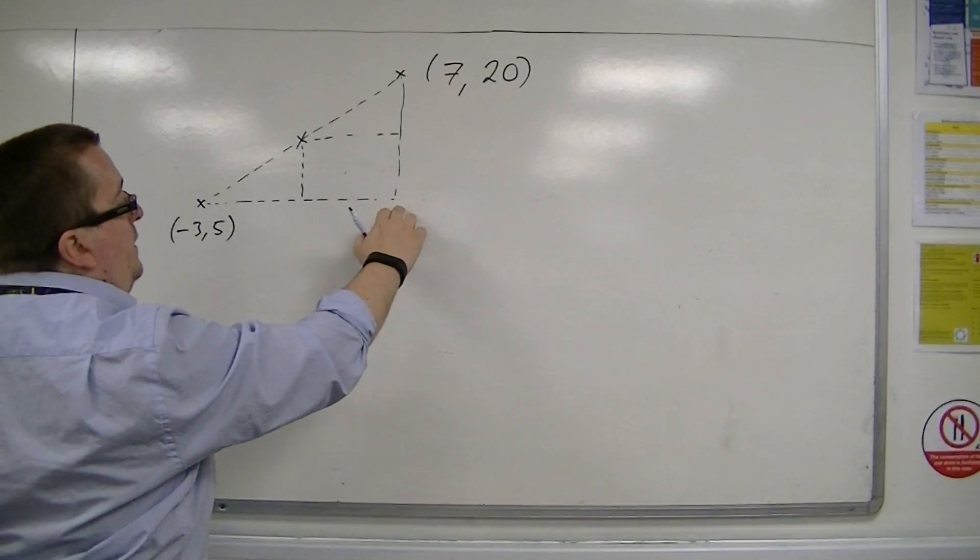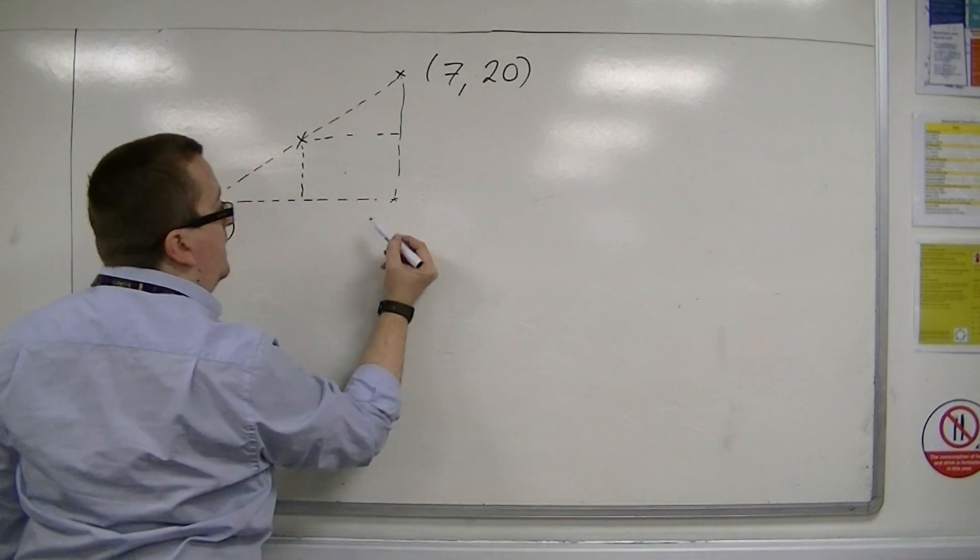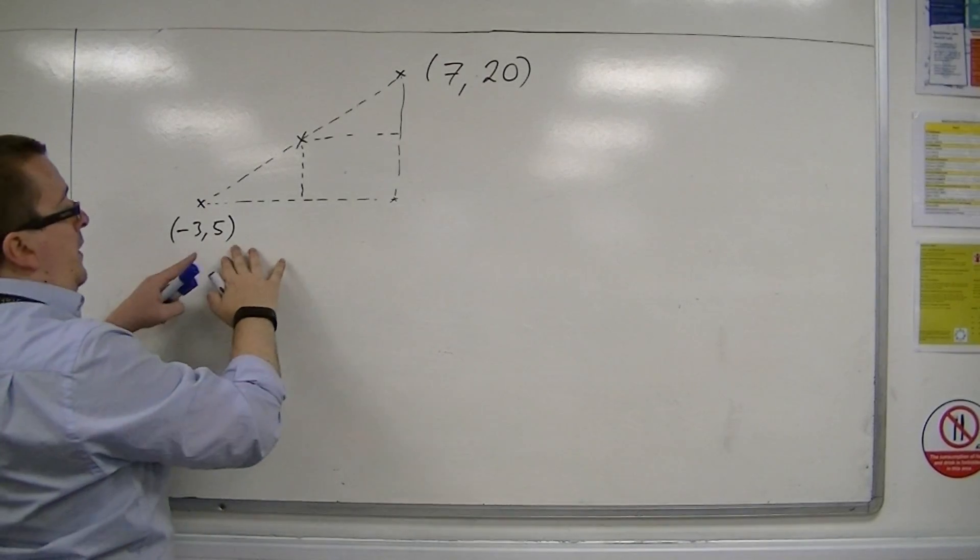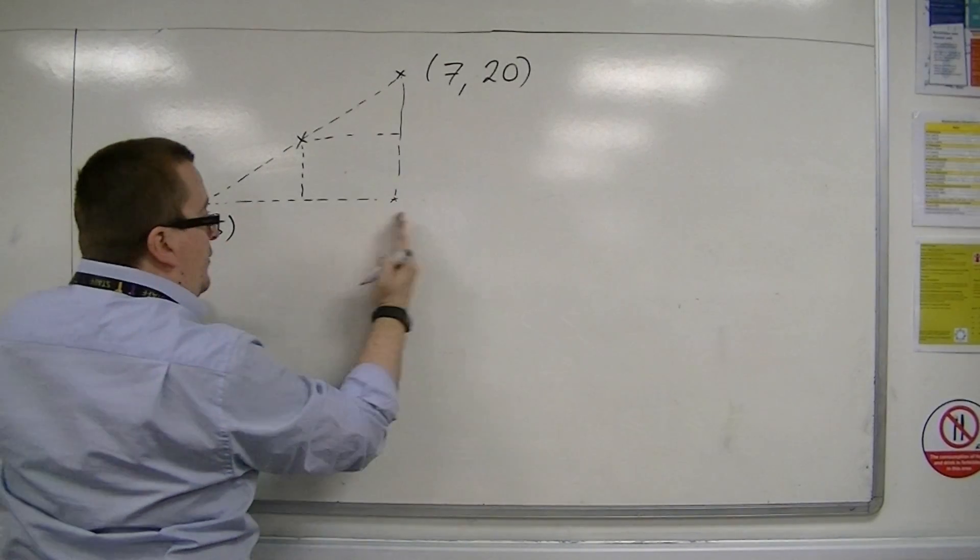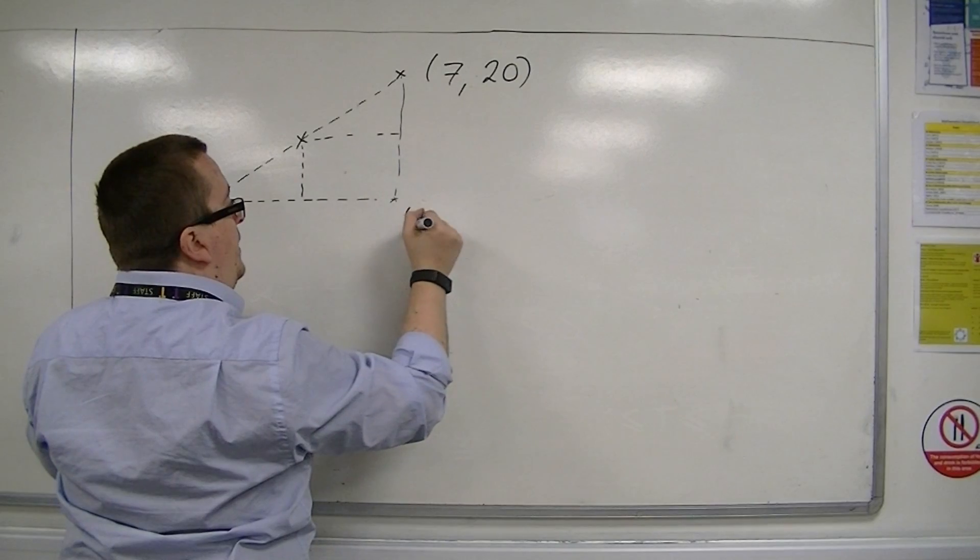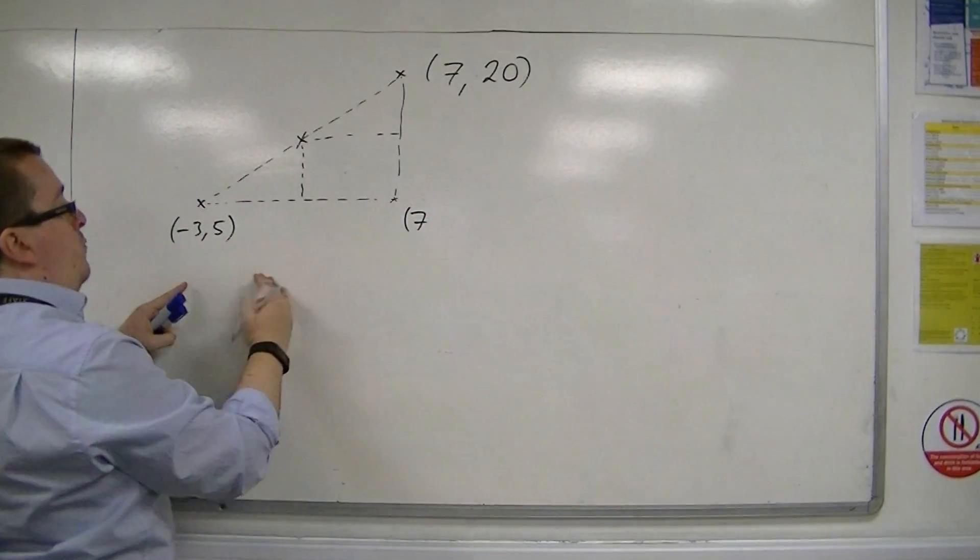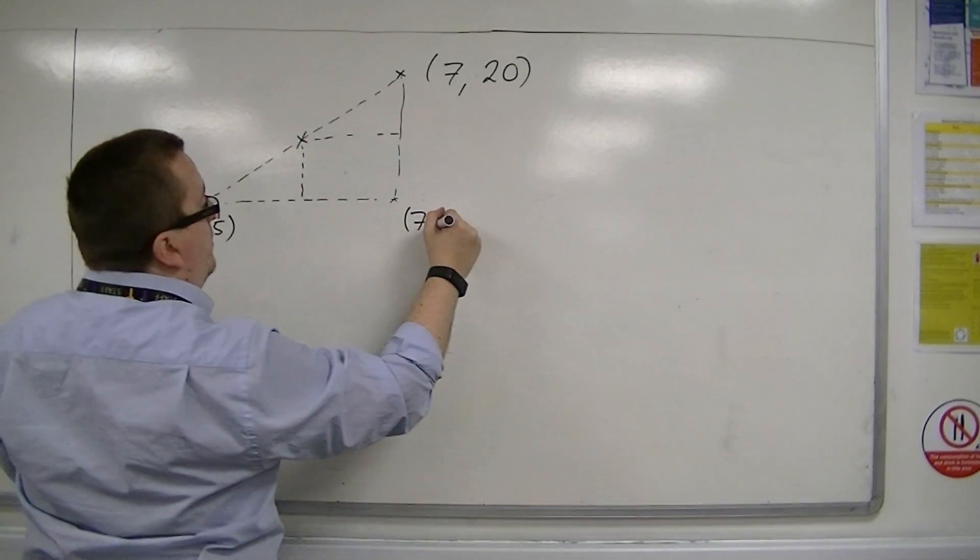Now this point, this corner point here, would have the coordinates, well it would have the same x-coordinate as this point, so it would be 7, and it would have the same y-coordinate as this point, so it would be 5.